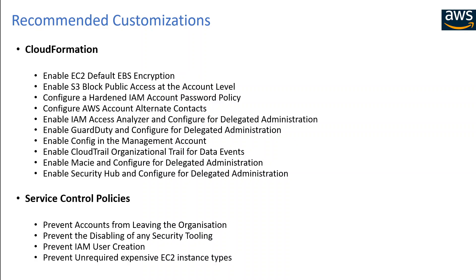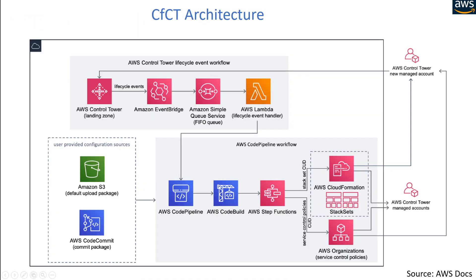Next, let's look at what exactly CFCT is and how it works. Let's have a quick look at the AWS-supplied architecture. The CFCT architecture is broadly divided into two workflows: one is the AWS Control Tower lifecycle event workflow, and the second is the AWS CodePipeline workflow.